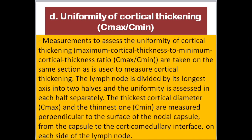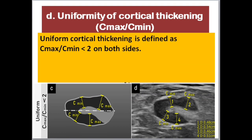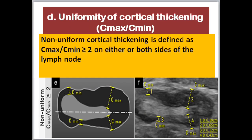Uniformity of cortical thickening: Measurements to assess the uniformity of cortical thickening use the maximum cortical thickness to minimum cortical thickness ratio, Cmax:Cmin ratio, taken on the same section used to measure cortical thickening. The lymph node is divided by its longest axis into two halves and uniformity is assessed in each half separately. The thickest cortical diameter, Cmax, and the thinnest, Cmin, are measured perpendicular to the surface of the nodal capsule from the capsule to the corticomedullary interface on each side. Uniform cortical thickening is defined as Cmax:Cmin less than two on both sides, while non-uniform cortical thickening is defined as Cmax:Cmin greater than or equal to two on either or both sides of the lymph node.